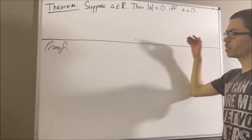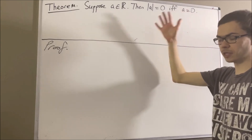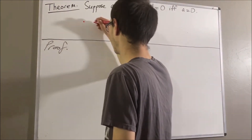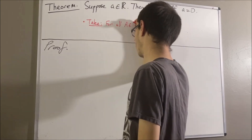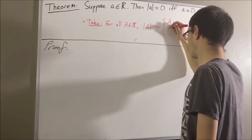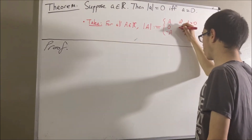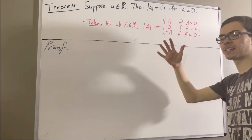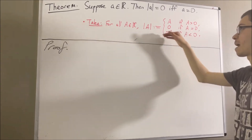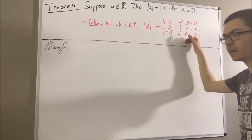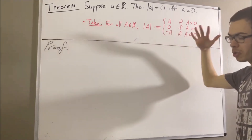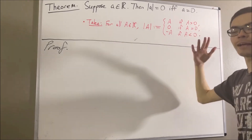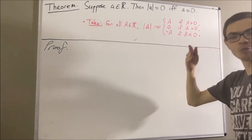Now, we're going to say that our definition of absolute value is as follows. And we're going to rely on a fact that we proved previously about absolute value: for every real number a, if a is non-zero, then the absolute value of a is greater than zero.